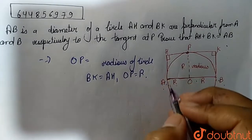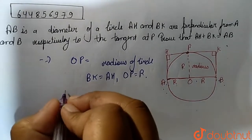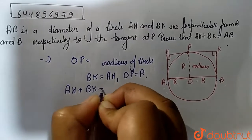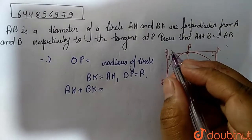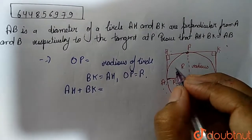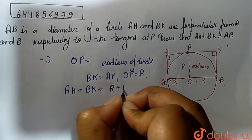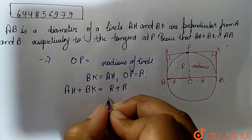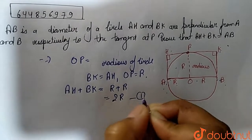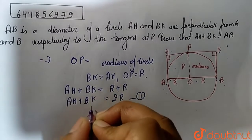From this, we can form our first equation: AH + BK = r + r = 2r. So equation number 1 is: AH + BK = 2r.